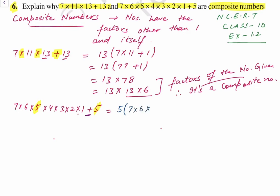We take 5 as common. Inside we are left with 7 into 6 into 4 into 3 into 2 into 1 — you can write 1 or not, it's your wish, since multiplying by 1 doesn't change the value — plus 1. When you multiply all the terms inside, you get 1008 plus 1, which gives 1009.